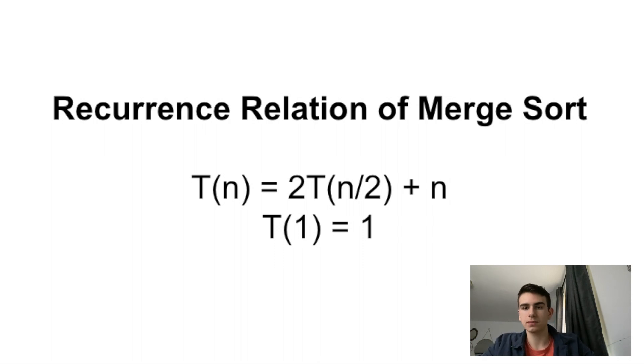That bottom thing, the T(1), is a base case. It's like after we've finished breaking down our list and then merging it back together, all we have to do is just make one little if statement call, which is all of one. So we don't really have to worry about that.